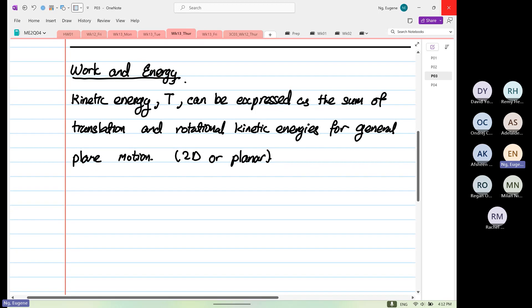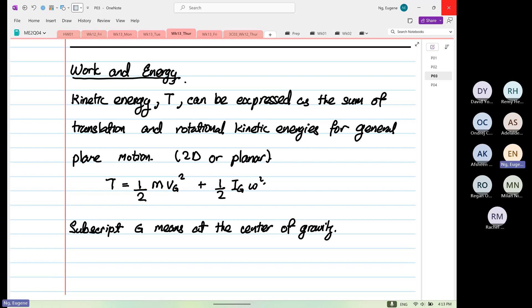So T is equal to half M V_G squared plus by half I_G omega squared. So the subscript G means what? At the center of gravity. So I believe all of you are very familiar with this equation.